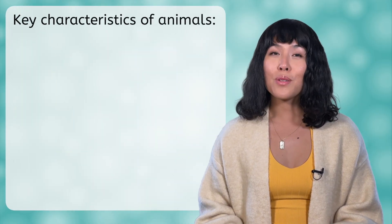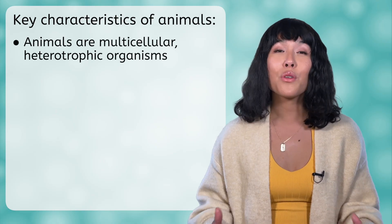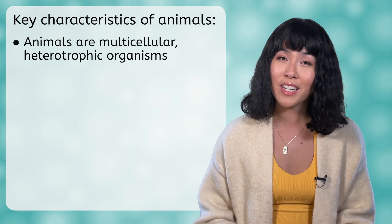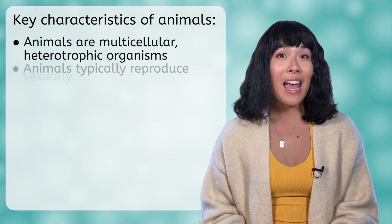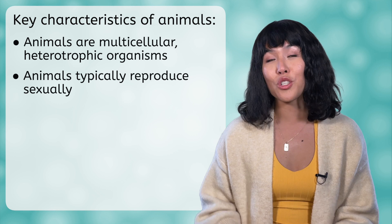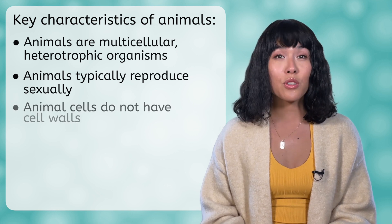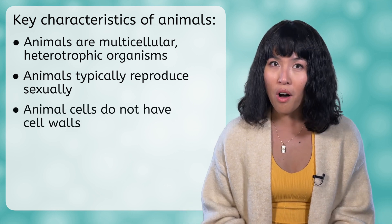Before we get too far into our discussion about invertebrates, let's take a moment and review the broader category of animals. There are a lot of different ways to define an organism as an animal, so we are going to focus on the five most common. 1. Animals are multicellular, heterotrophic organisms. 2. Animals typically reproduce sexually. 3. Animal cells do not have cell walls.